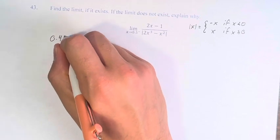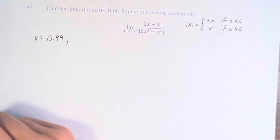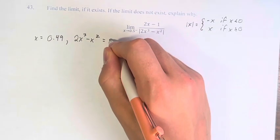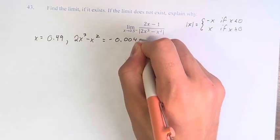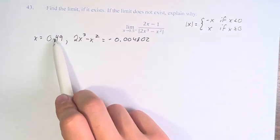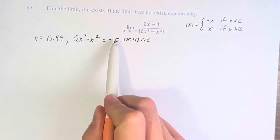So if we just plug in 0.49, 2x cubed minus x squared equals negative 0.004802. Very close to 0, obviously, because we know that at 0.5 we're going to be exactly 0, but less than 0.